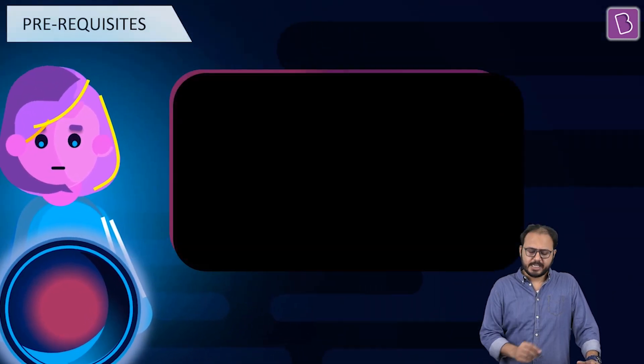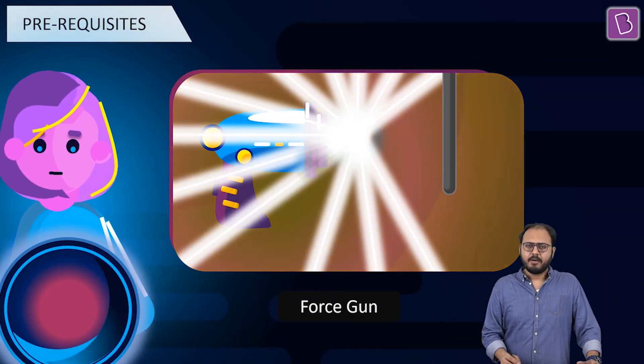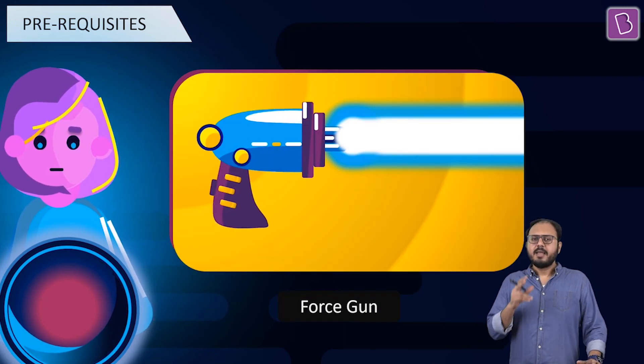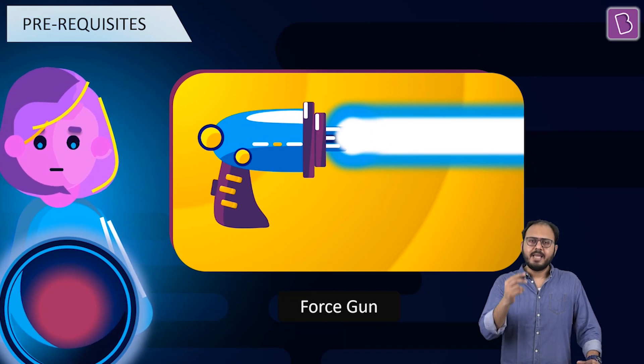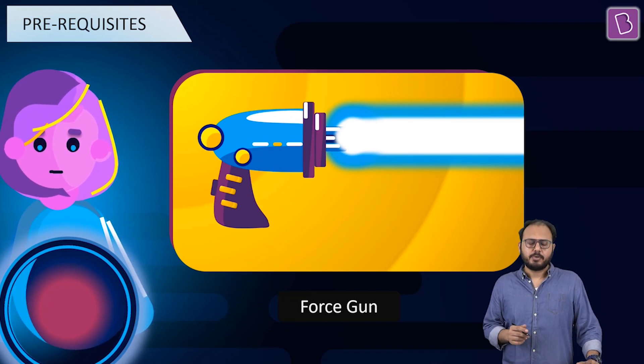Alright sir, what do we need for the experiment? We need a force gun. What is a force gun? Imagine a machine, it blows a beam. It actually incidents a beam on the body and that body experiences a force. Alright.